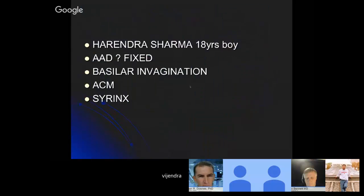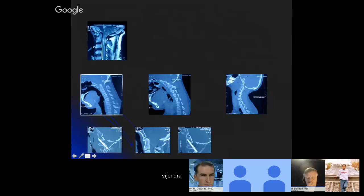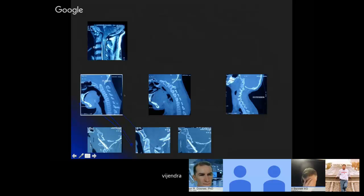The next patient had fixed AAD, basilar invagination, Arnold-Chiari malformation, and syrinx — all together. On MRI you can see the Arnold-Chiari malformation, syrinx, and the dislocation. CT scans show dislocation with a little basilar invagination. Even though the joints do not appear dislocated, there is dislocation, and we have to move C2 forward and downward. On post-operative images C2 has moved so much forward on both sides and is completely reduced. Foramen magnum decompression was also done, with rib graft on both sides which is completely incorporated on four-year follow-up.